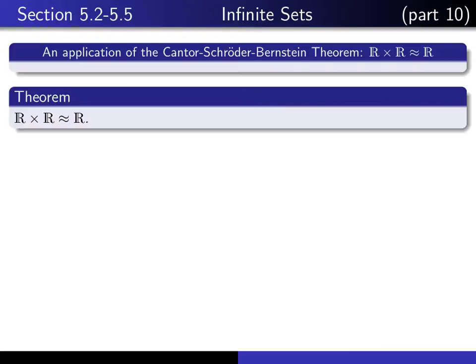So here's a statement of the theorem. R cross R and R have the same cardinalities. I think of all of the things that we've done in this course, this is the most surprising and maybe even the hardest to believe of everything that we've done. But nevertheless, the theorem is true.